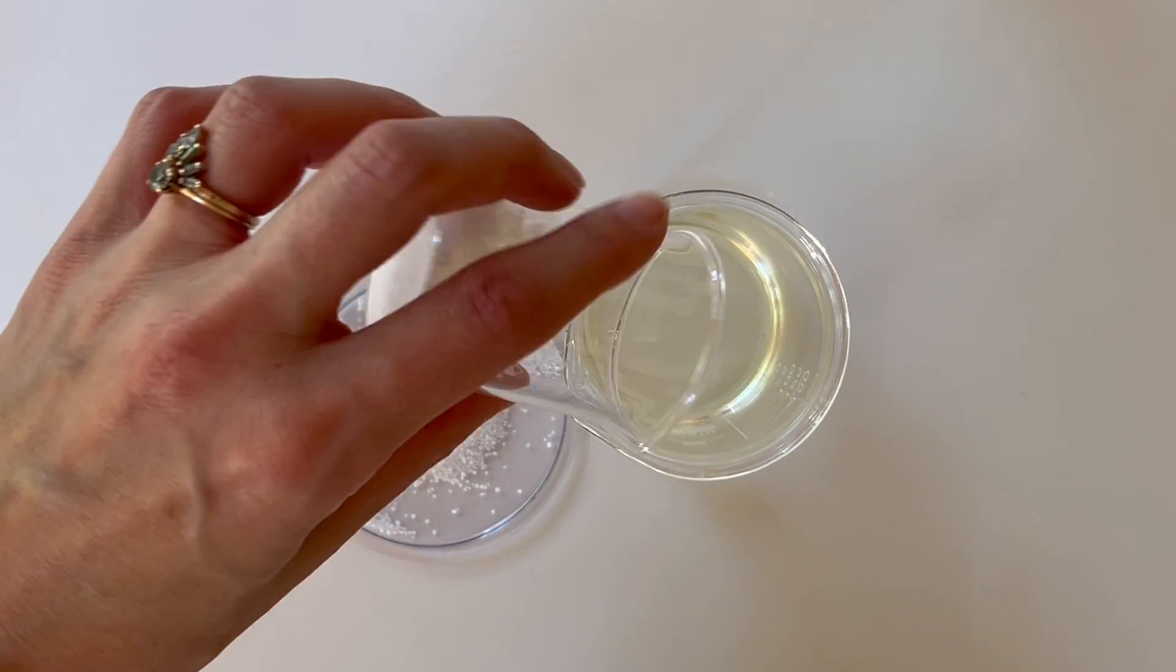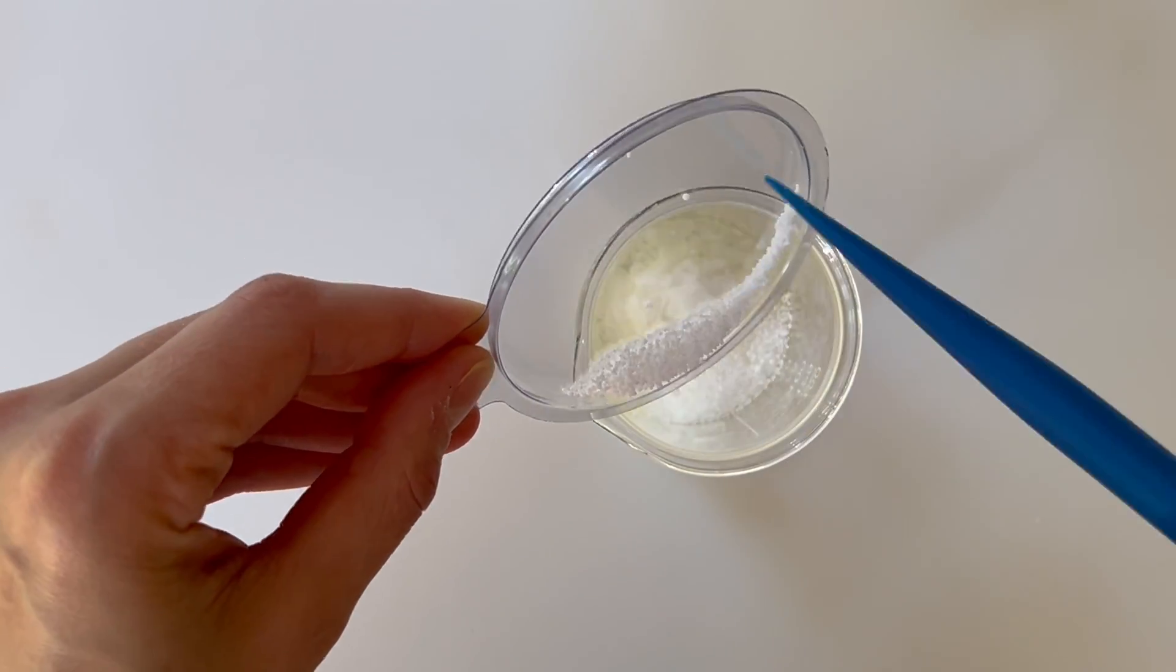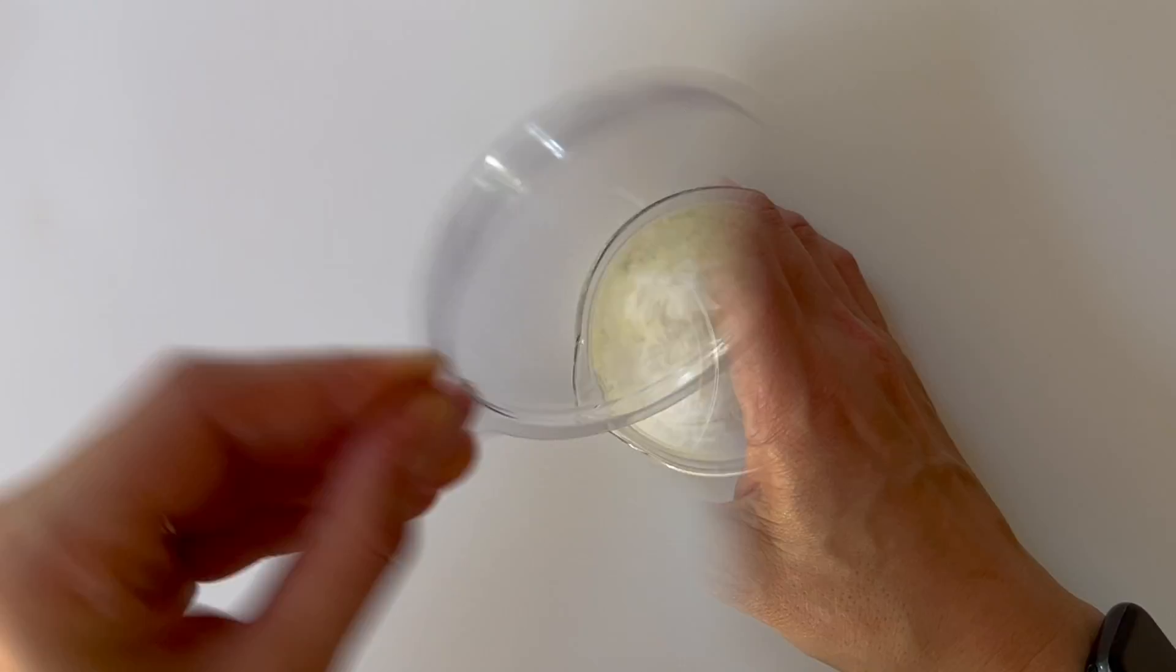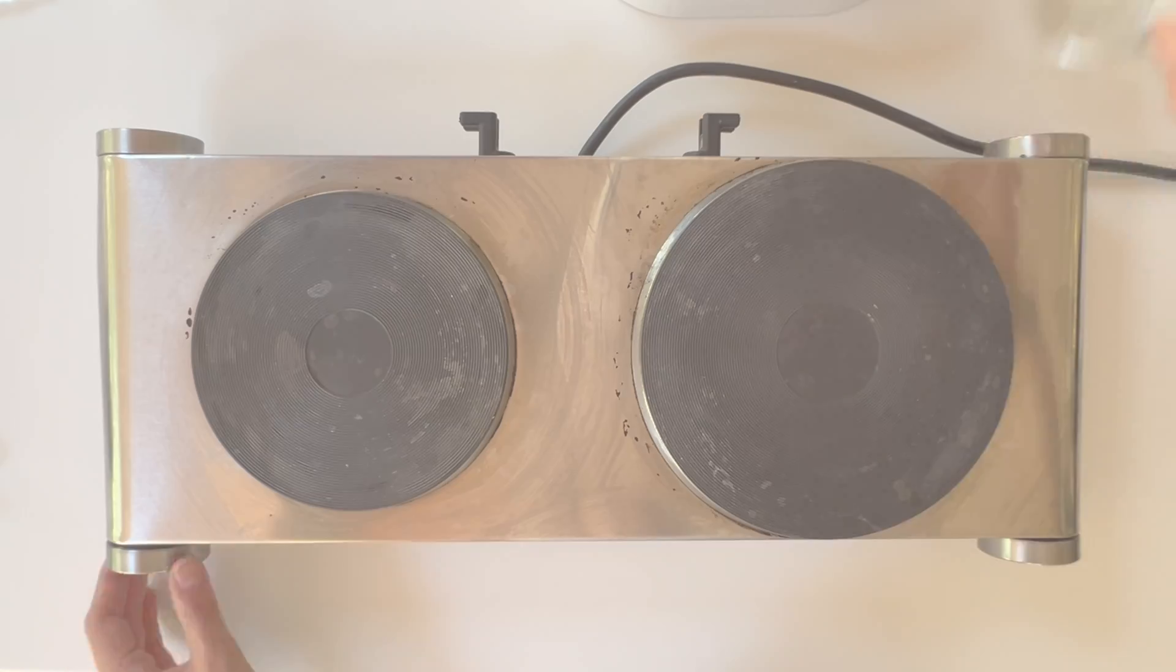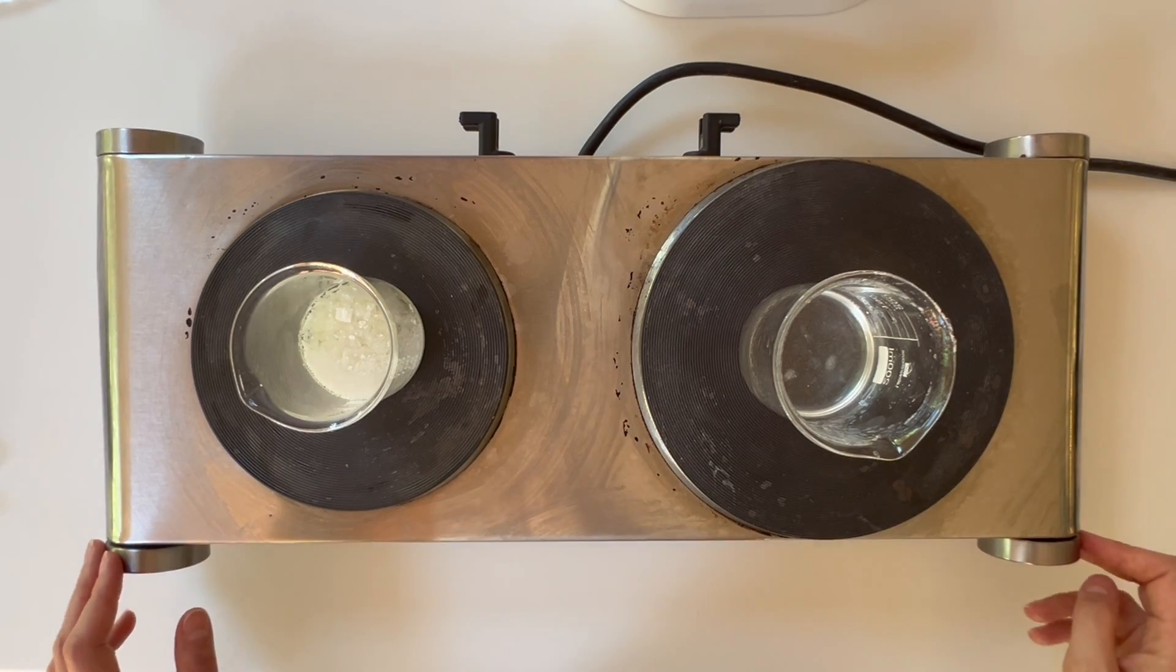Then we're going to add our phase C ingredients together, our emulsifier and co-emulsifier stabilizer. That's our phase C put together. And then we're going to heat them both up to 75 degrees Celsius.